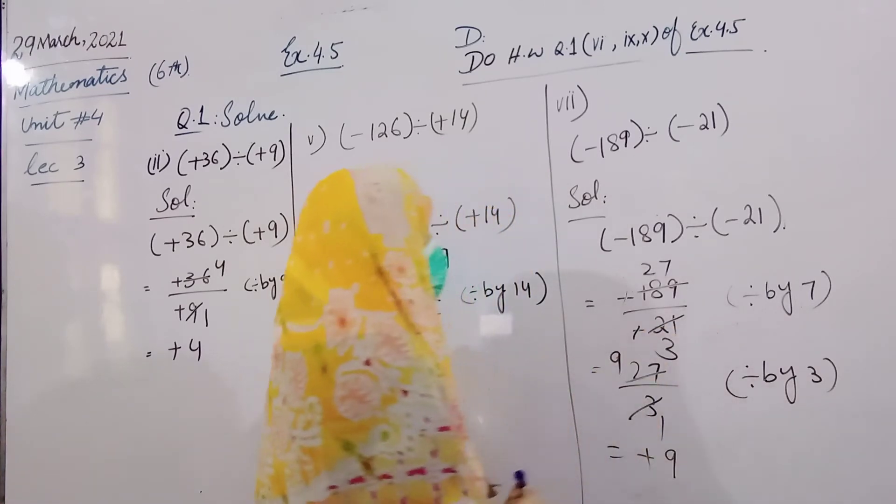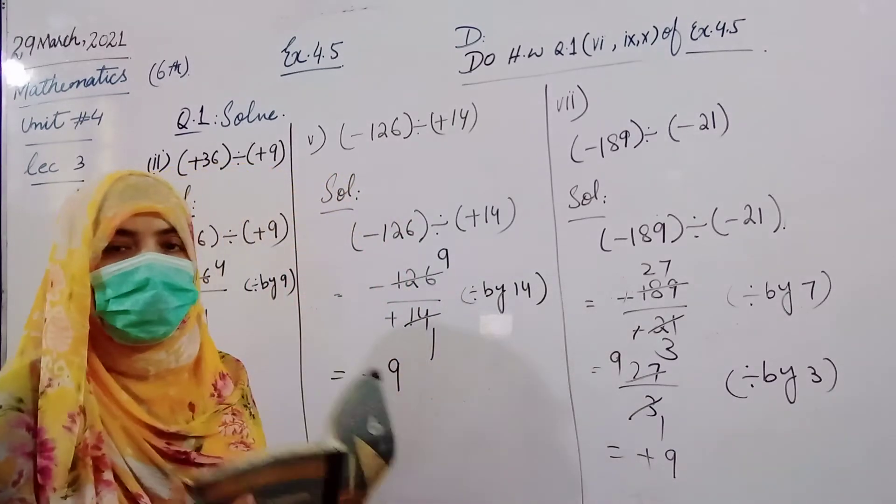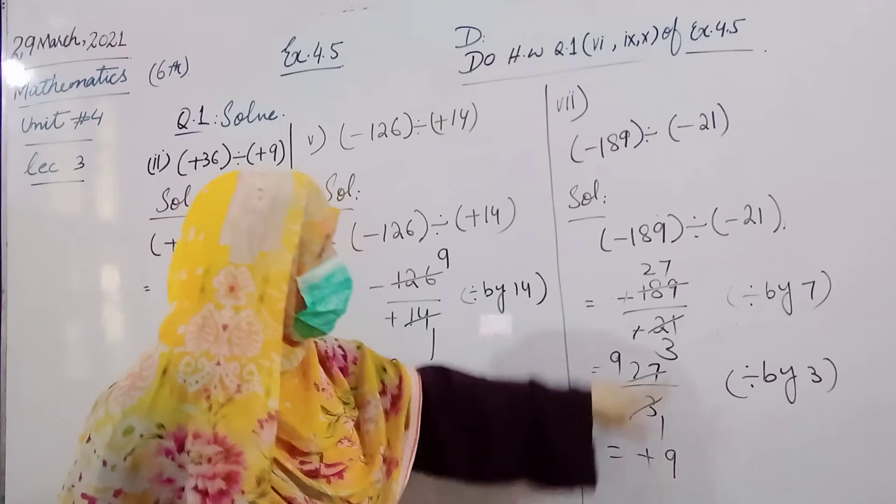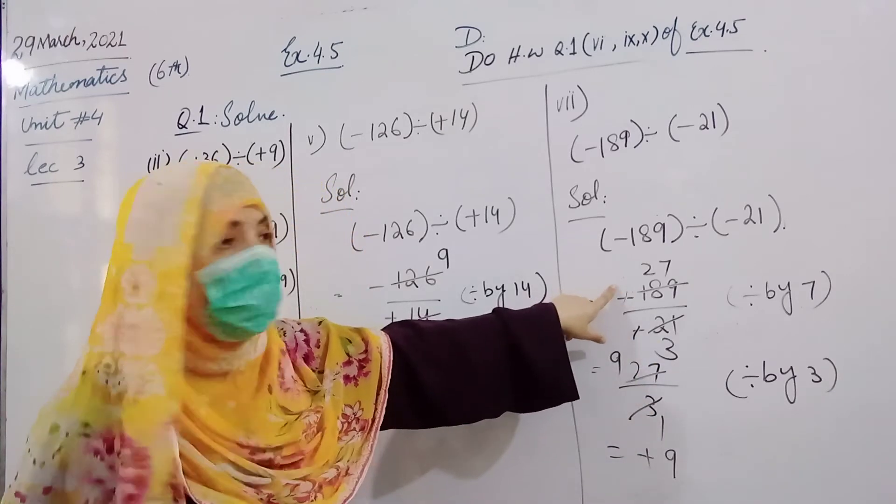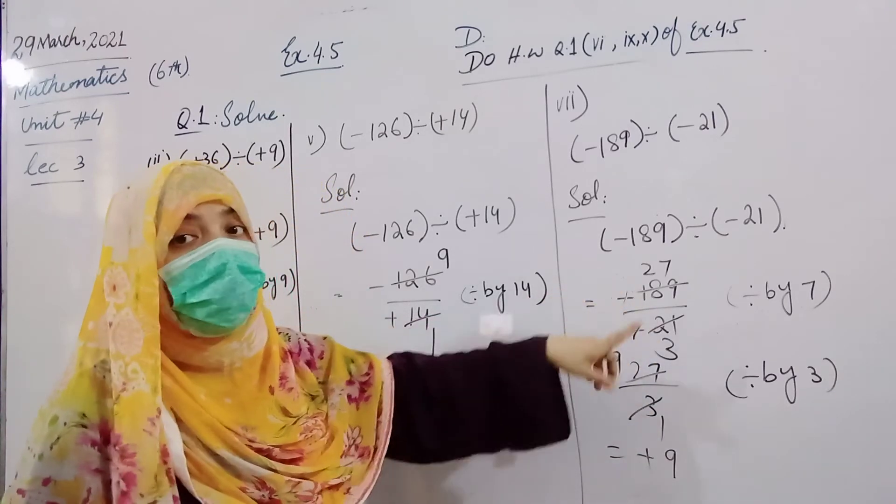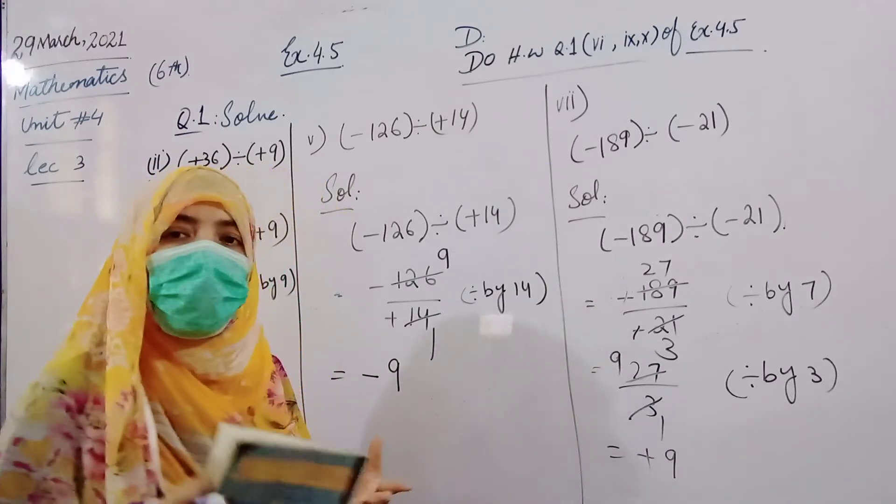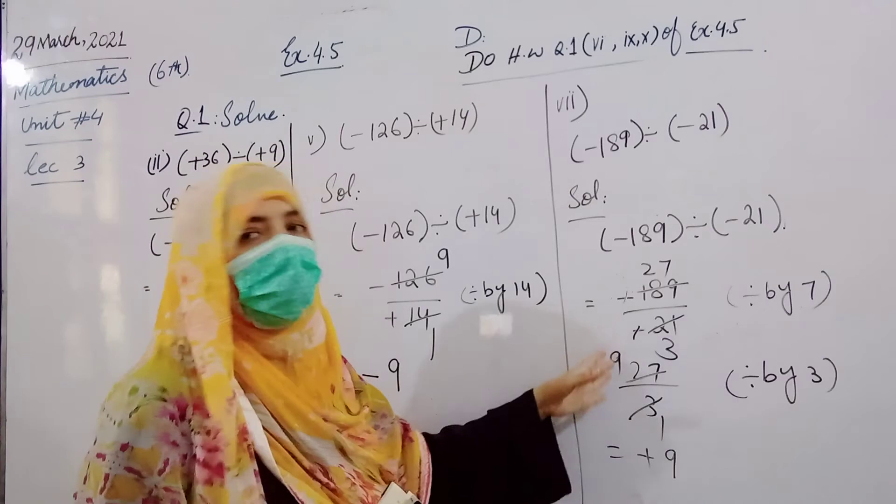Answer is plus 9, a positive integer, because if we multiply 21 by plus 9, we get minus 189.